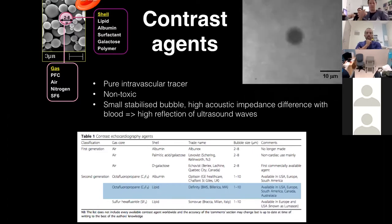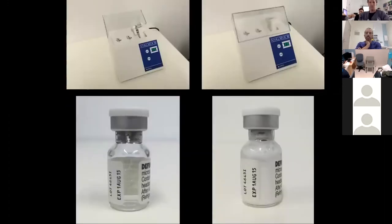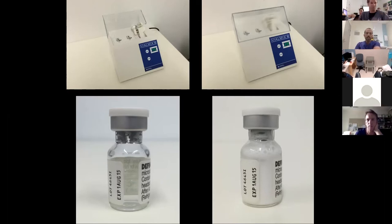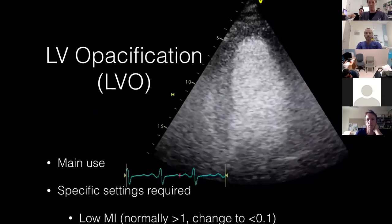This is what a DEFINITY vial looks like — about 1-point-something mL of clear fluid. You put it in the vial mix which shakes it 3,000 times in 45 seconds, producing a white emulsion. You draw that up into a 20 mL syringe and can inject it either 1 mL at a time or via a syringe driver over about half an hour to 40 minutes.